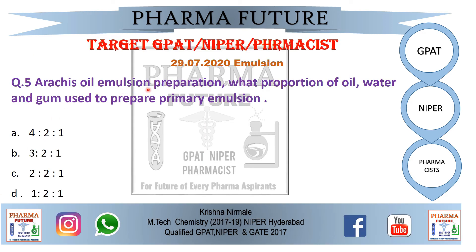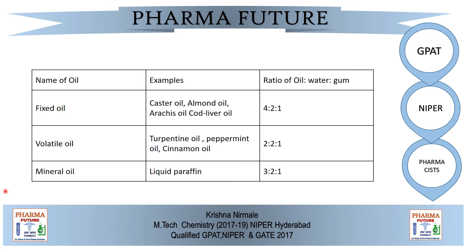Question 5: In arachis oil emulsion preparation, what proportion of oil, water, and gum is used to prepare a primary emulsion? Option A: 4:2:1. Option B: 3:2:1. Option C: 2:1:?. Option D: 1:1 ratio. For fixed oils such as castor oil, almond oil, arachis oil, and cod liver oil, the ratio of oil:water:gum is 4:2:1 — making Option A the correct answer for arachis oil. For volatile oils (turpentine, peppermint, cinnamon), the ratio is 2:1. For mineral oil (liquid paraffin), the ratio for preparing the primary emulsion is 3:2:1.